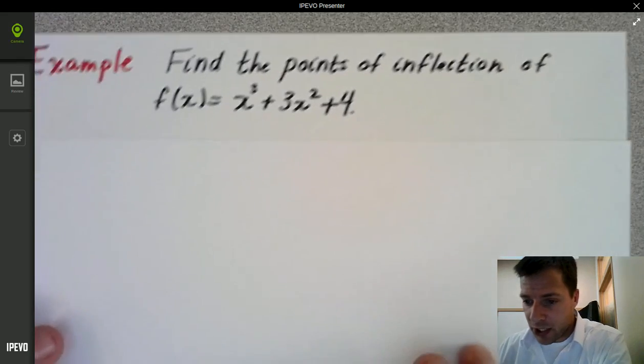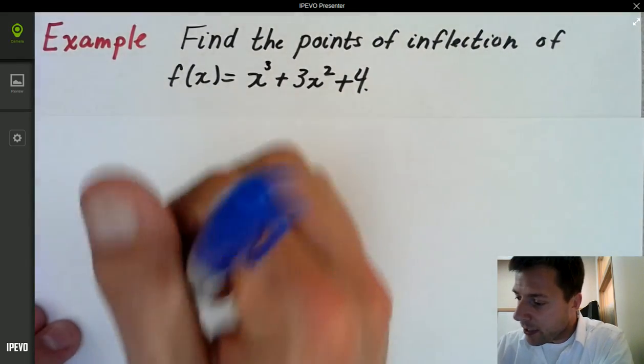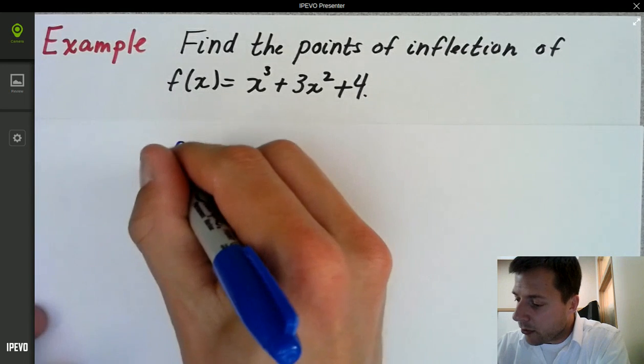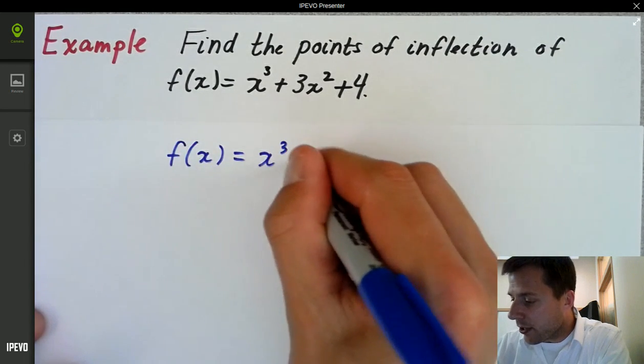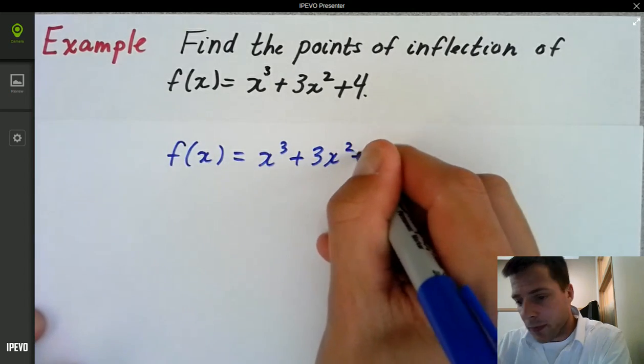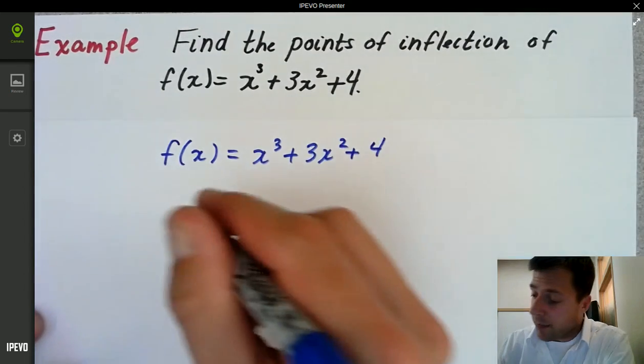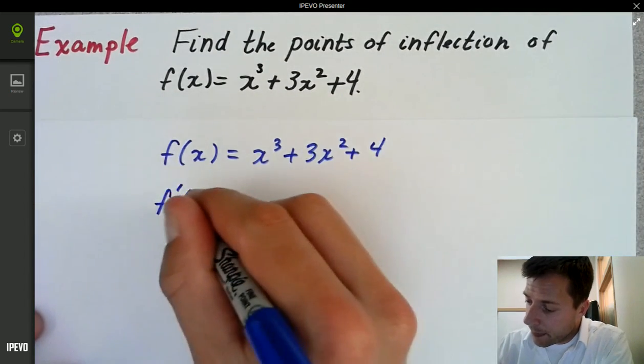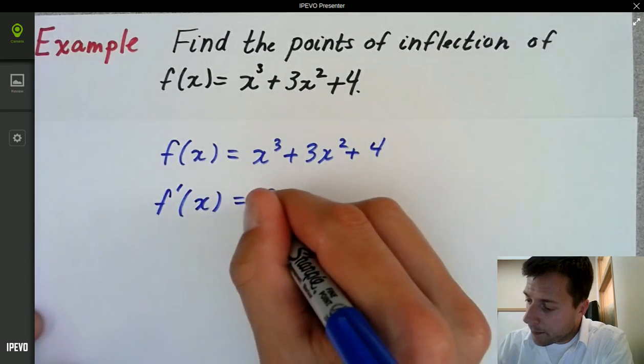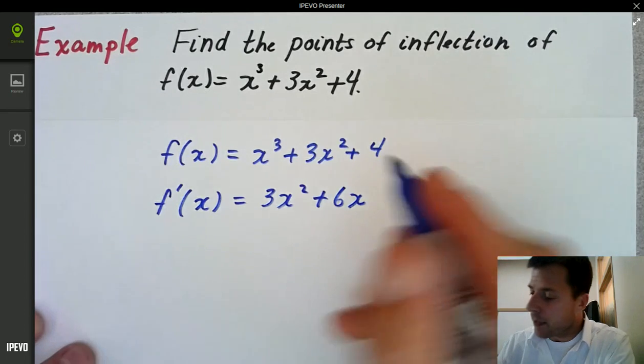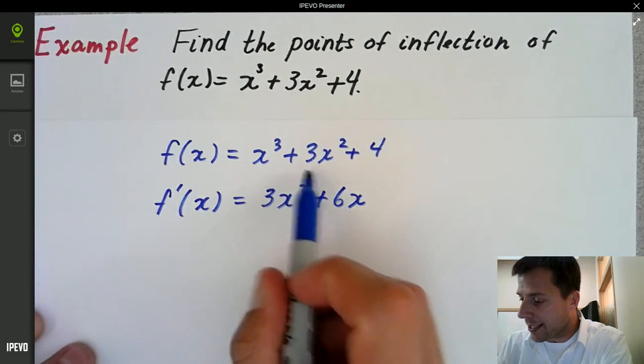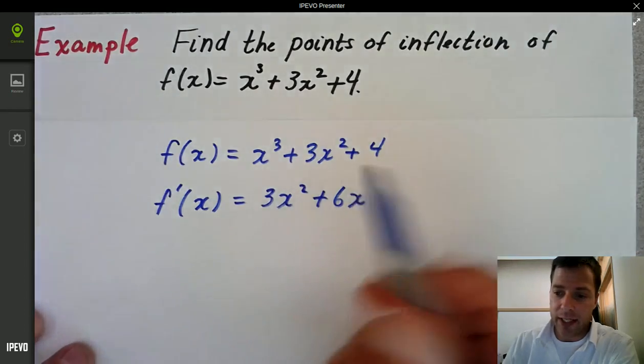So points of inflection, we want to be thinking second derivative. So let's go ahead and rewrite our function here. I'm going to have x cubed plus 3x squared plus 4. Now I'm going to go ahead and take the first derivative. So just a simple power rule. So we get 3x squared plus 6x and the derivative of the constant is 0.